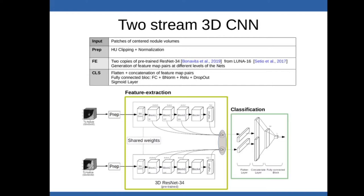The feature extraction is composed of two copies of a 3D ResNet34 pre-trained from the Luna 16 open dataset, which is composed of more than 750,000 labelled nodule candidates. From these two networks, pairs of feature maps from different depth levels of the nets are generated and sent to the classification part. The classification component pre-processes these feature maps by flattening and concatenating them, to finally pass them to a fully connected block which outputs the final lung cancer prediction.